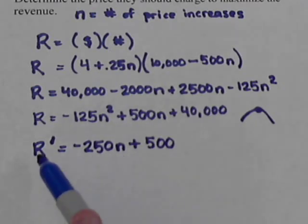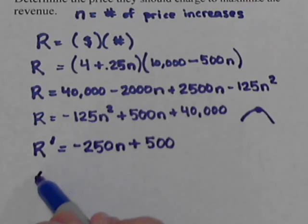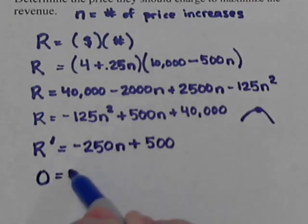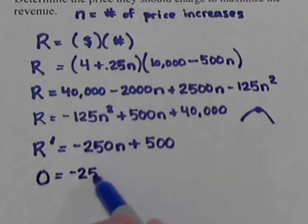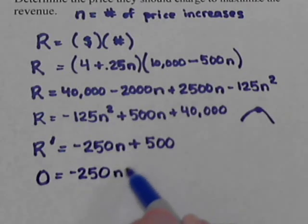And the critical point is where the derivative is 0. So, we're going to set this equal to 0. So, we've got negative 250n plus 500.